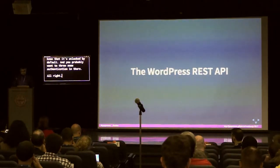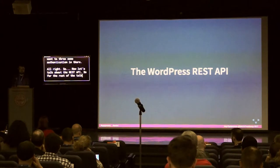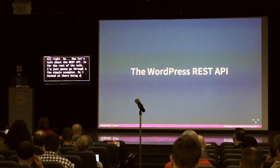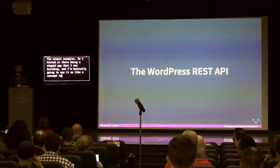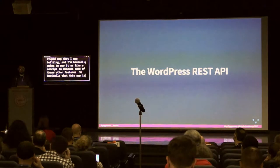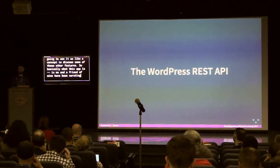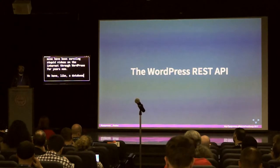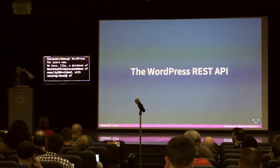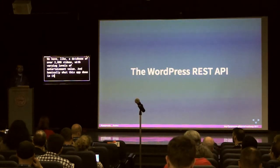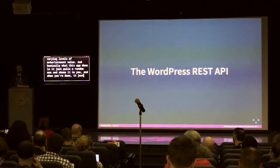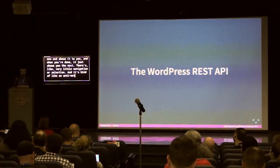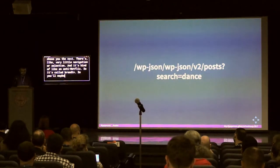Now let's talk about the REST API. For the rest of the talk I'm going to go through some simple examples. The stupid app I've been building — me and a friend have been curating stupid videos on the internet through WordPress for years. We have a database of over 2,000 videos with varying levels of entertainment value. The app just pulls a random one and shows it to you, and when you're done, it shows you the next one — very little navigation or selection.